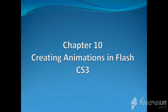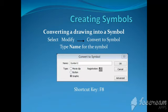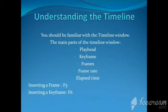The next chapter is chapter number 10: creating animation in Flash CS3, where we are going to talk about the timeline. The first thing is creating a symbol. When I am going to draw any object, there are two parts — the outline, which is the stroke color, and the inner color. I must convert that object into a symbol. You have to select the modify option from the menu bar and then convert that object into the symbol. You can type a name for the symbol, or you can also use the shortcut key F8.